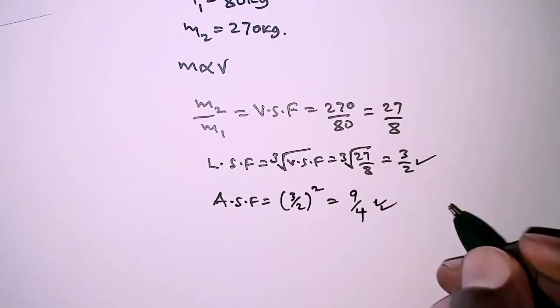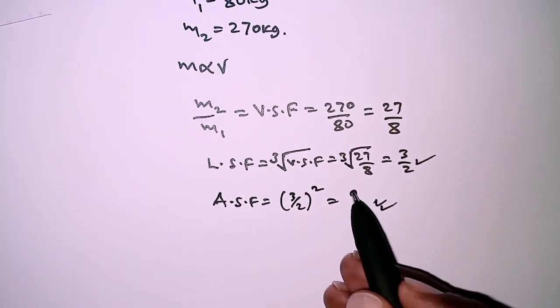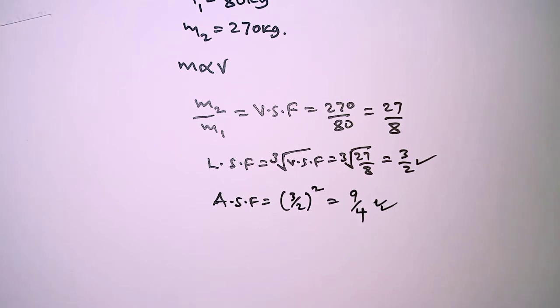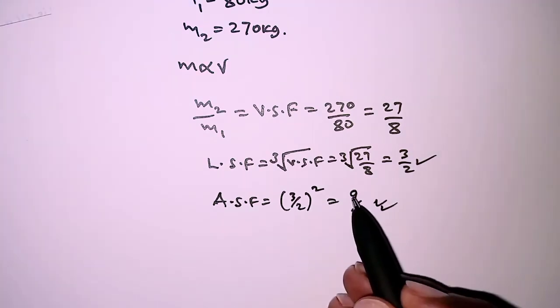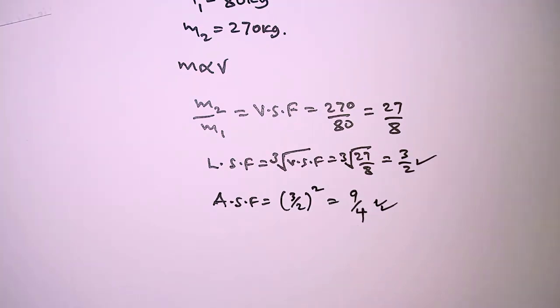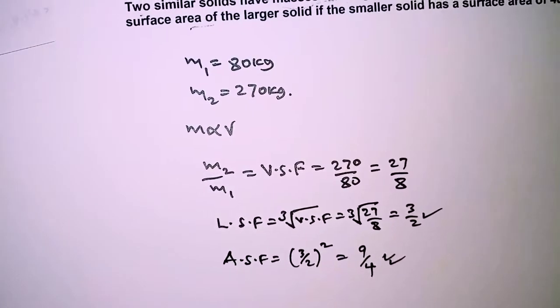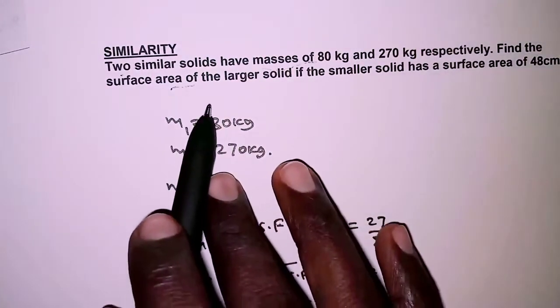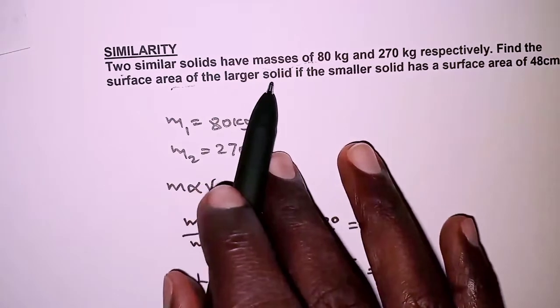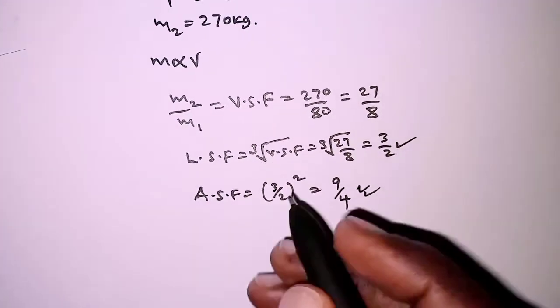We have numerator larger than the denominator, so this means larger over smaller. We are required to get the surface area of the larger solid.